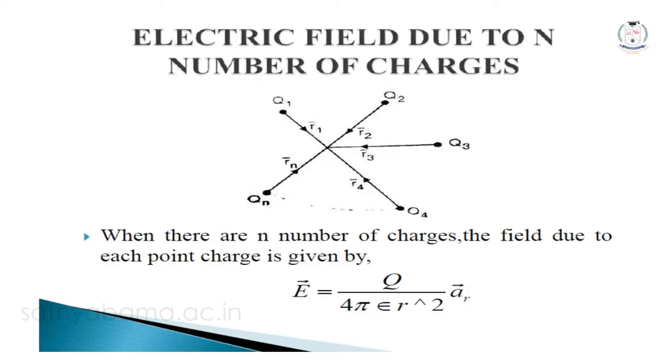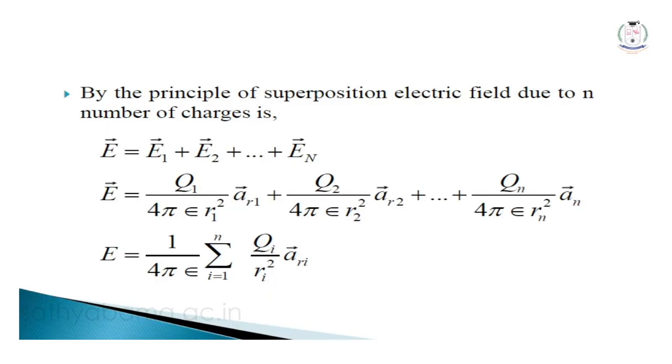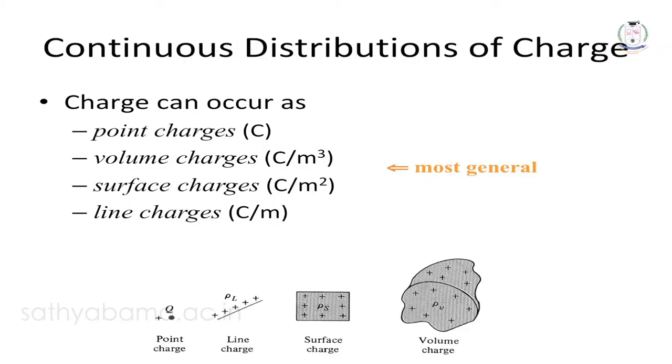For multiple charges — n number of charges q1, q2 up to qn — there will be individual electric field intensities E1, E2 up to En. According to the principle of superposition, the total electric field intensity E equals E1 + E2 + E3 + ... + En. The generic formula E = Q / (4πε r²) applies to each point charge. This analysis is for point charges — a single charge at one location.